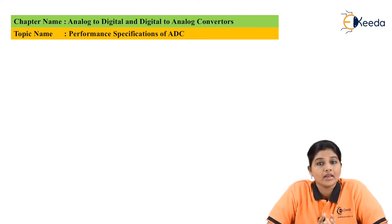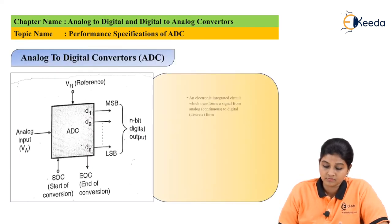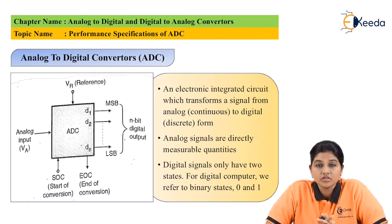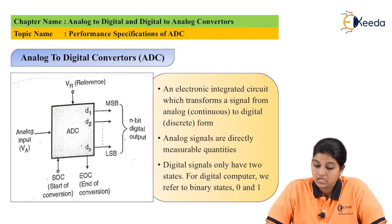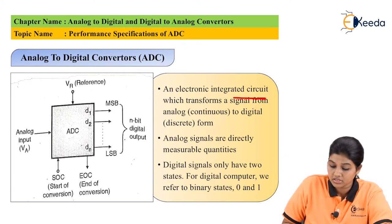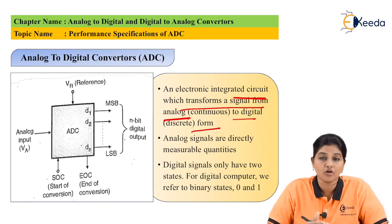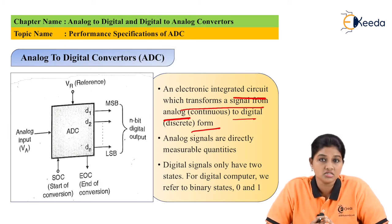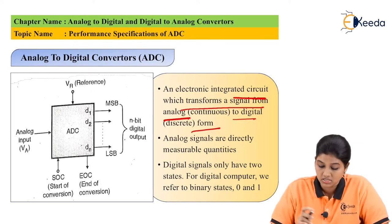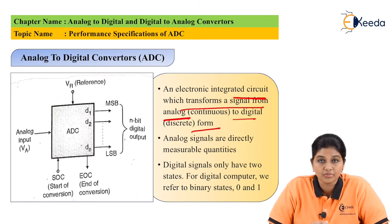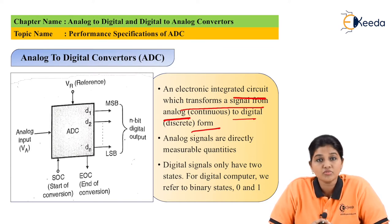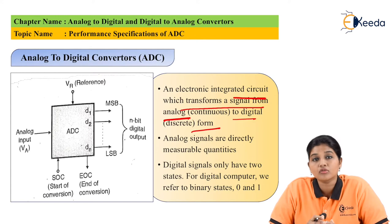Let's have a look at the analog to digital converter. The analog to digital converter is basically an electronic circuit available in the form of an IC — an electronic integrated circuit which transforms signals from analog to digital format. Analog signals are continuous signals, continuously varying with respect to time, whereas digital signals are discrete and have a constant value at one instant of time. Analog signals are directly measurable quantities, while digital signals have only two states: 0 and 1. A computer system cannot understand analog signals — it understands only 0s and 1s — so analog to digital converters are required.